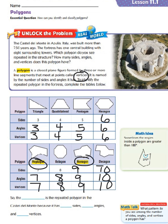So when we identify these and look back at our figure, we can see that the octagon is the repeated polygon in the Castello di Monte, because it has eight sides, eight angles, and eight vertices. If we look at our picture, we see an octagon here, here, here, and throughout the structure — it's basically made up of all octagons.